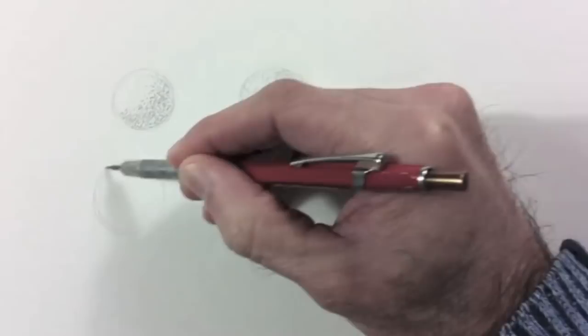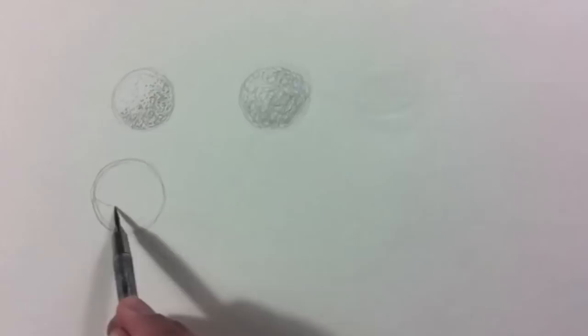To draw a bright metal, like the chromed rim cover of a car, I would shade it totally smooth and with a high contrast of tone.